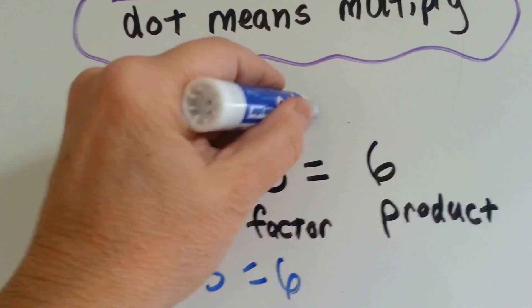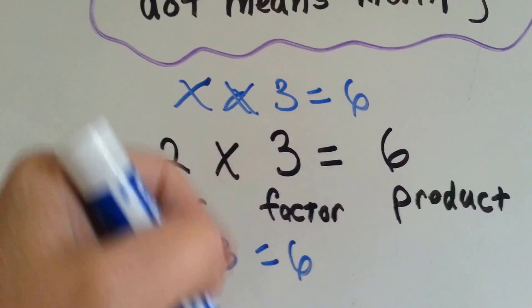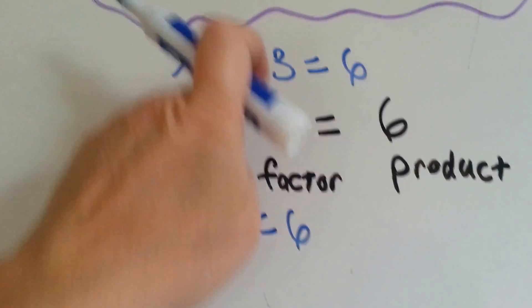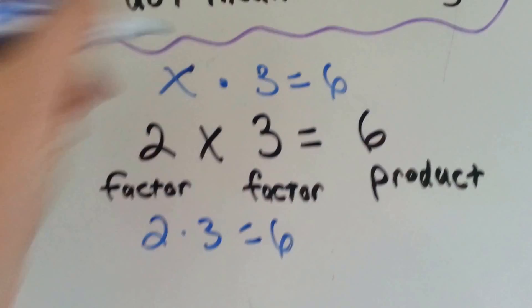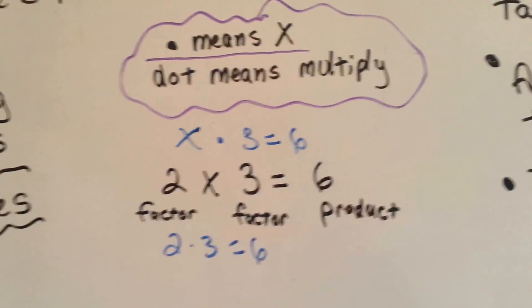x times 3 equals 6. See? And you can't do that. You can't say xx. So what they do is they take the x away and they put a dot. See? That way you don't get confused if the variable happens to be an x.